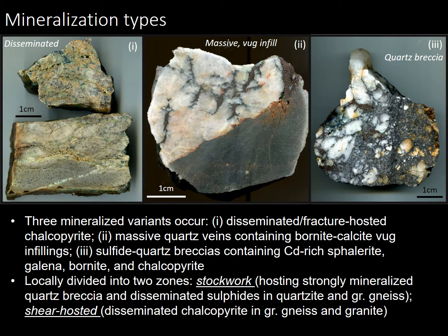Mineralization occurs as three separate variants: disseminated fracture-hosted chalcopyrite — you can see chalcopyrite filling the fractures here — massive quartz veins containing bornite, calcite, and vug-infill fillings, and sulfide quartz breccias containing cadmium-rich sphalerite, galena, bornite, and chalcopyrite. Locally, the mineralization was divided into two zones: stockwork, hosting strongly mineralized quartz breccias and disseminated sulfides in quartzite and granitic gneiss, and shear-hosted disseminated chalcopyrite in granitic gneiss and granitoids.